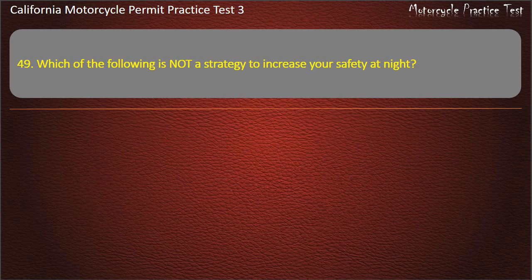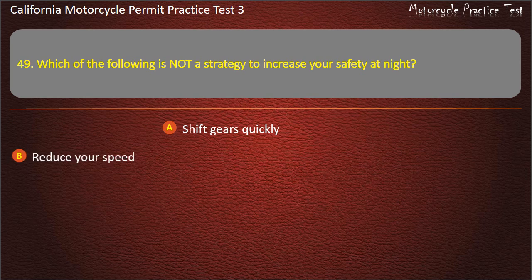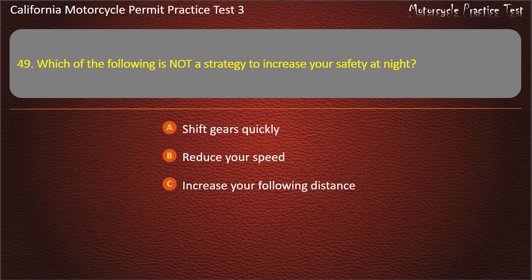Question 49. Which of the following is not a strategy to increase your safety at night? Shift gears quickly, reduce your speed, increase your following distance, or use your high beam. Answer: Shift gears quickly.